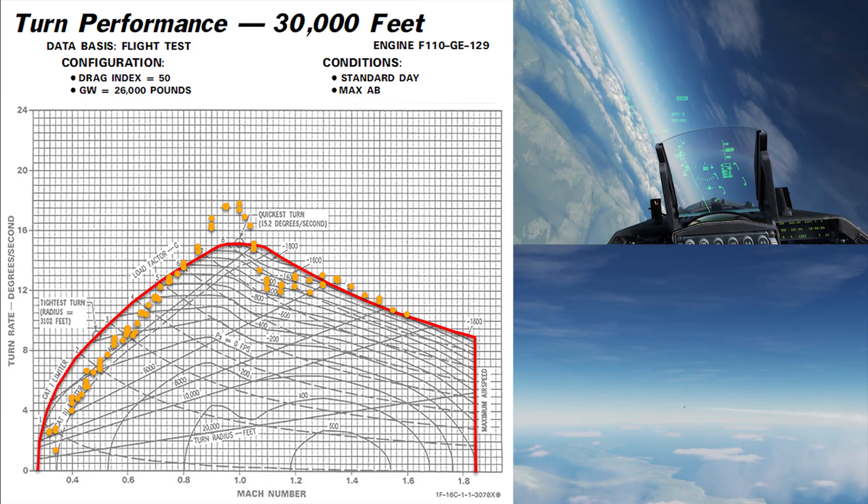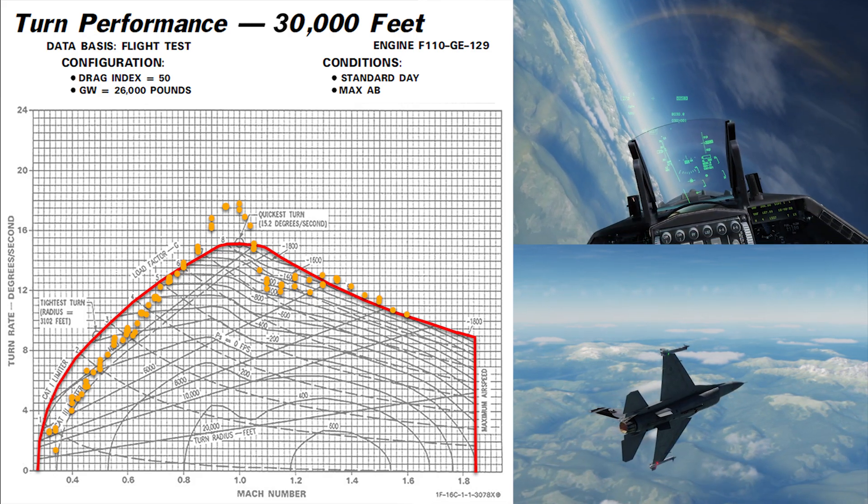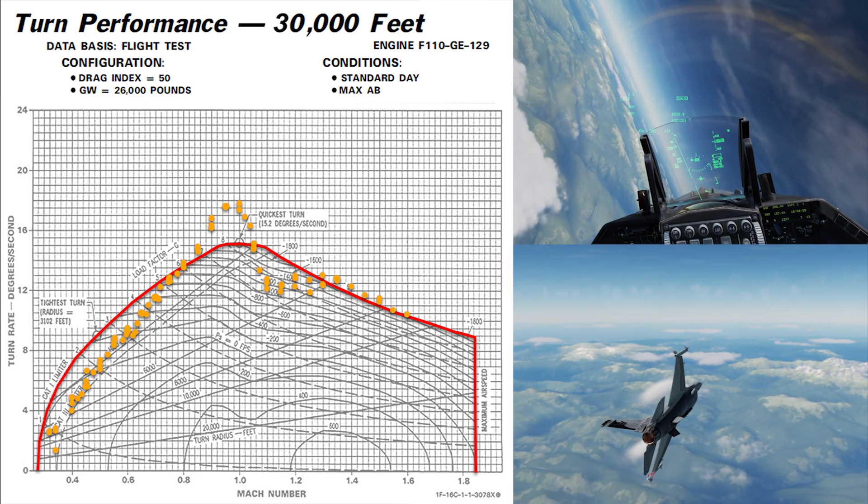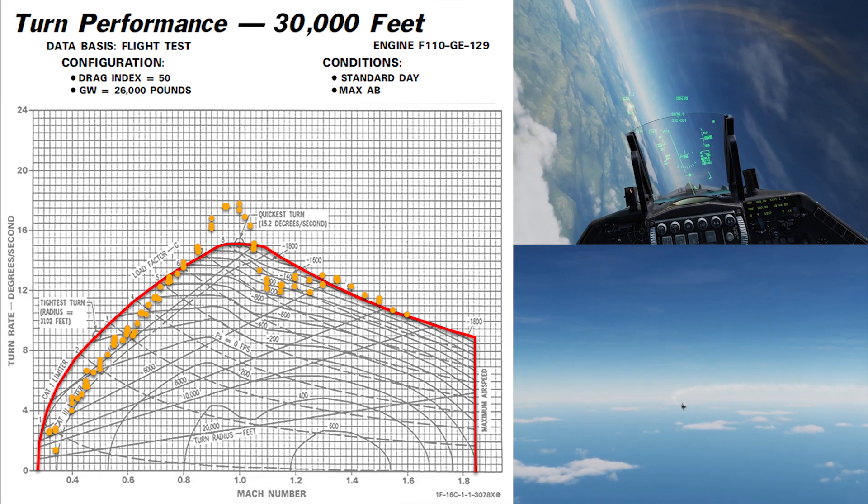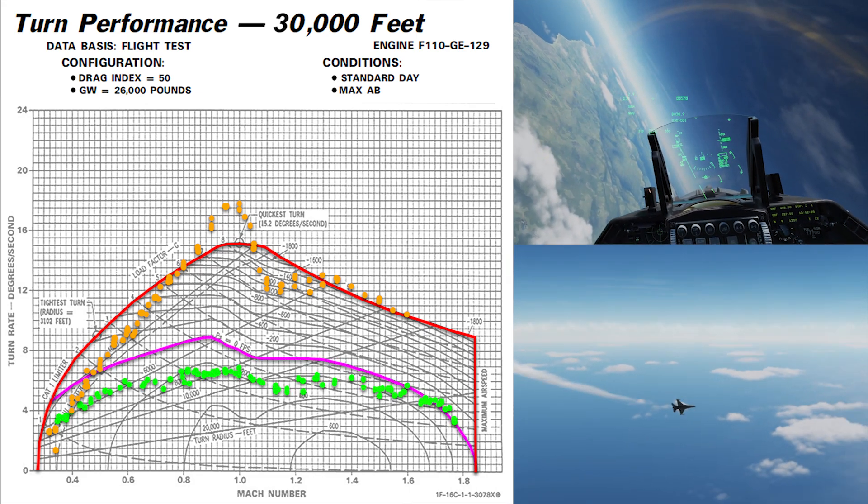So in this case we kind of see that it under-performs until it gets to about Mach 0.8, then it over-performs with a peak to about Mach 1.05, and then it under-performs again. So advantage, disadvantage, it is what it is in this case.